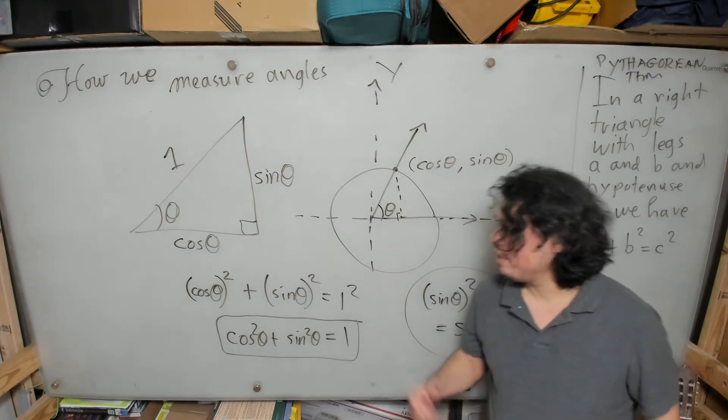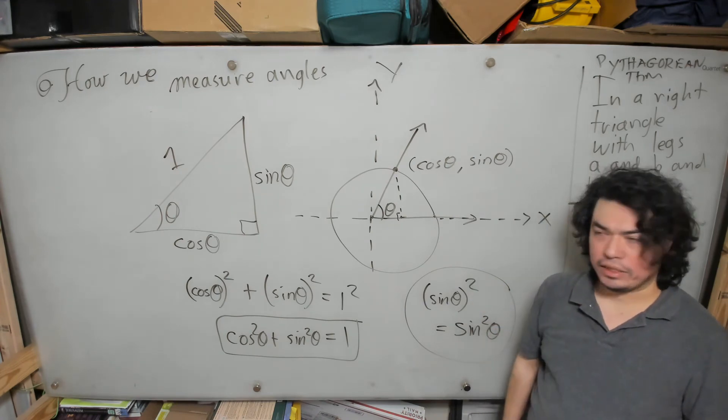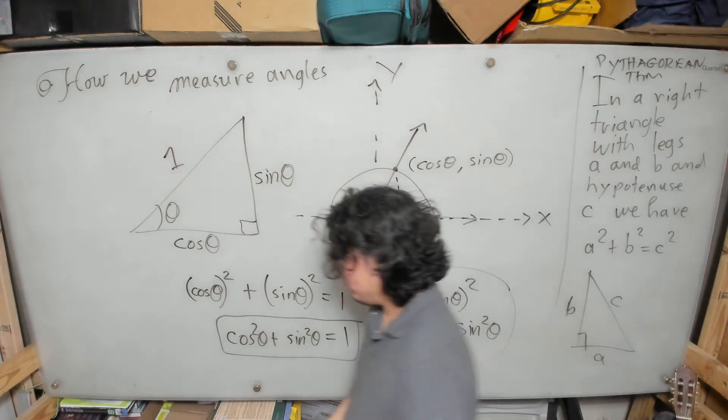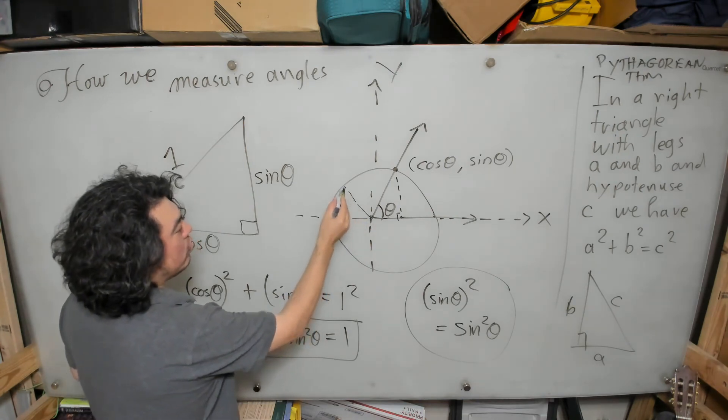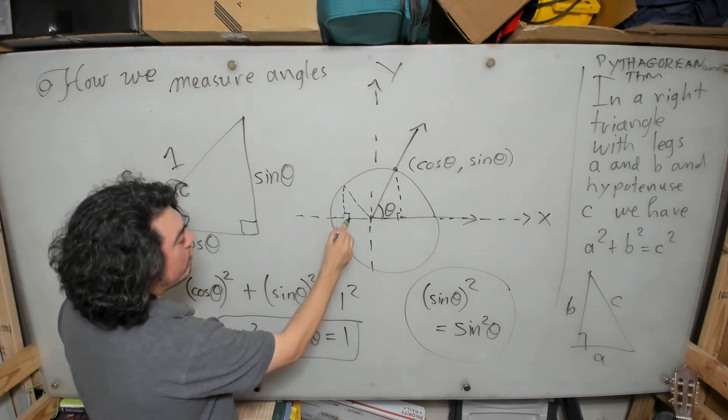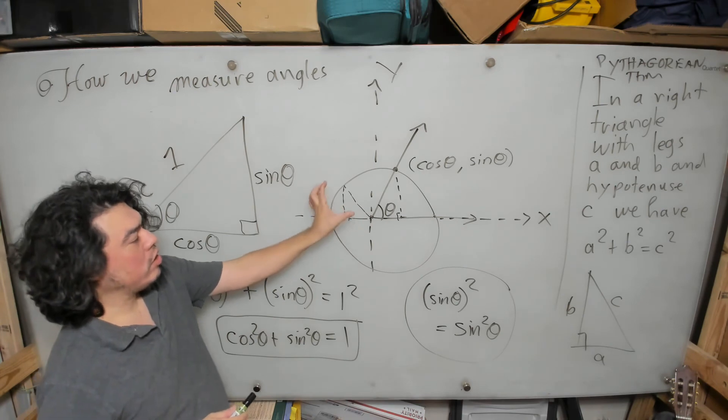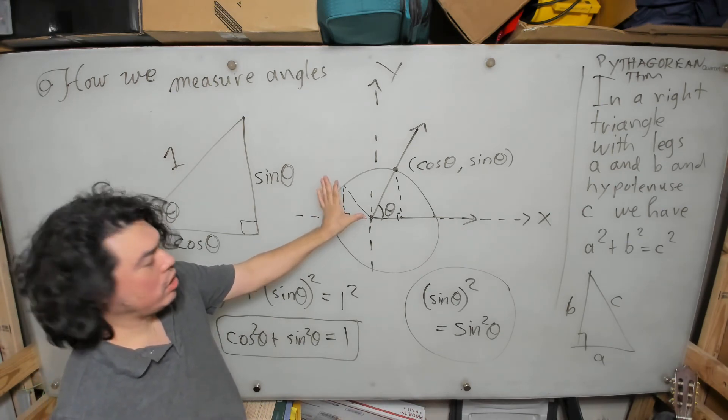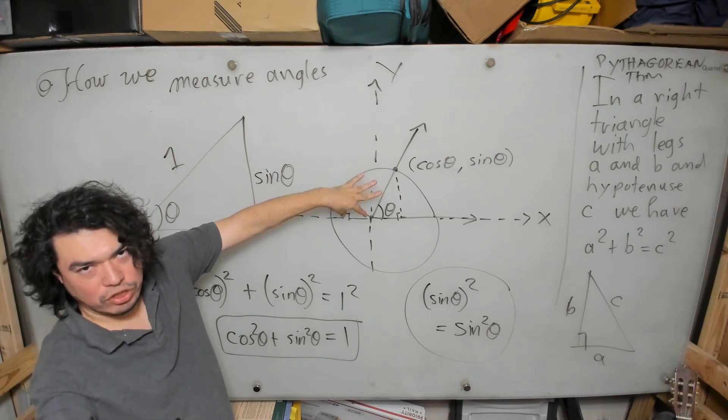And you might say, 'Well David, does that apply anywhere in the unit circle?' And in fact it does. If you want to imagine, for example, that the terminal side was over here, then we would drop this perpendicular. We would have this right triangle, and you can see that in this right triangle here, that hypotenuse still has length one.